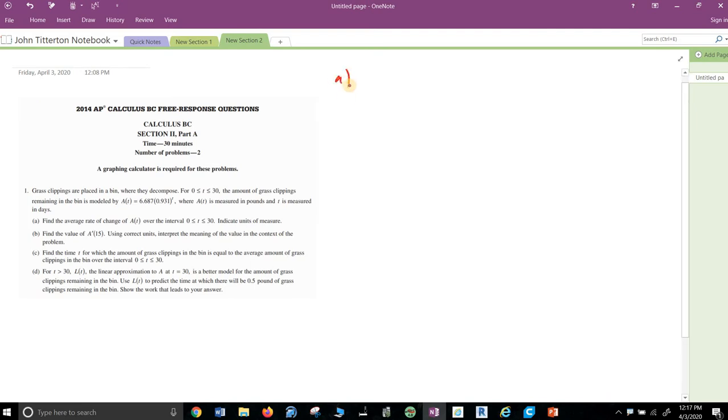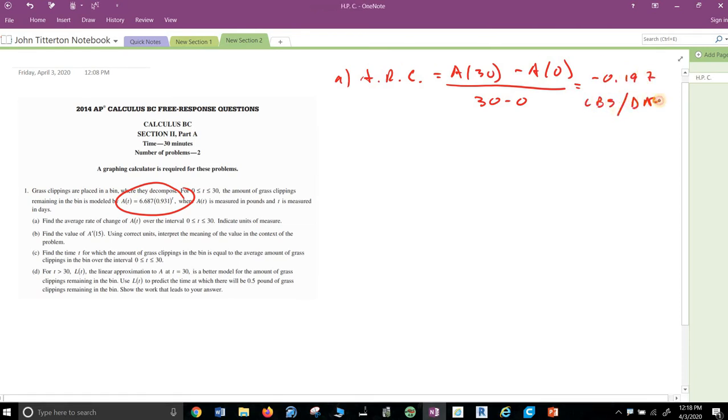Well, this is a calculator problem. I don't have a calculator handy, so I'm just going to show you what I do. I'm basically going to say average rate of change, and I would actually write that out on a real test, is A(30), meaning plug 30 into this, minus A(0). Again, plugging zero into that, plus A(30) plus zero. Blast it out and I get negative 0.197 pounds per day. Did they ask for this one to interpret? No, they just want units, so watch out for units.